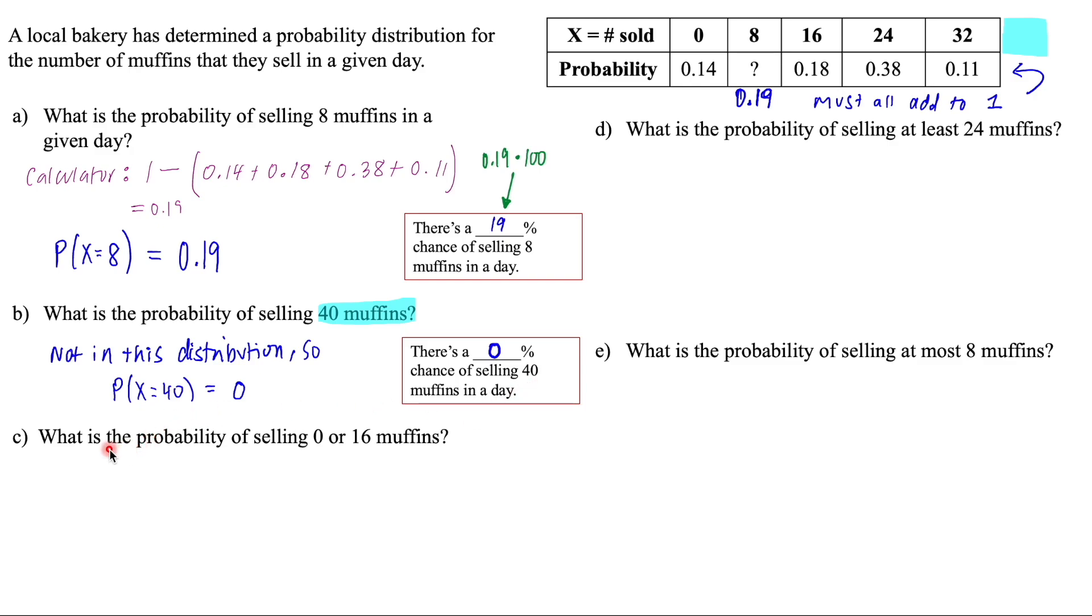The next question said, what is the probability of selling zero or 16 muffins? So as I'm reading that, I want to see in the table where zero or 16 is. What we're going to do is we're going to add those together, add up all the total possibilities that it's zero and that it's 16.